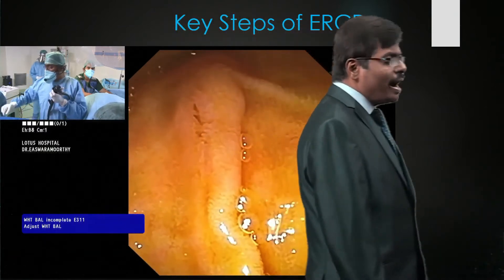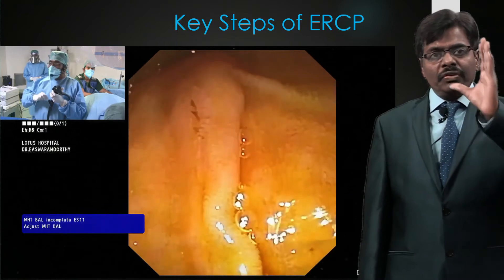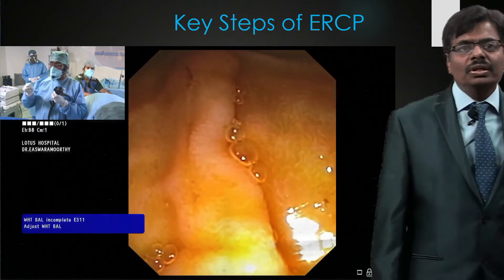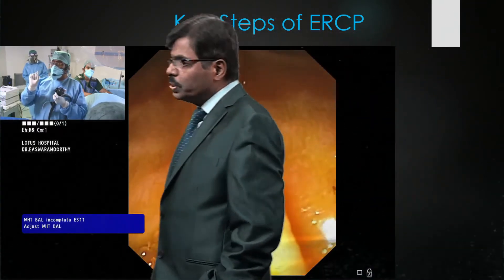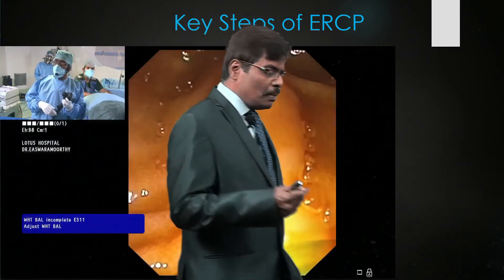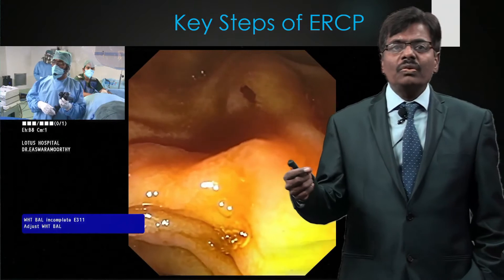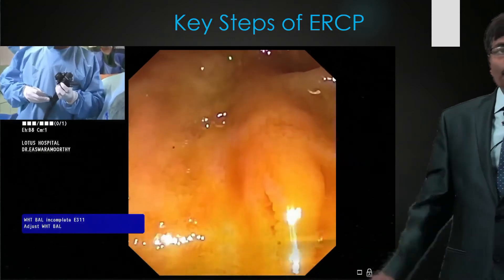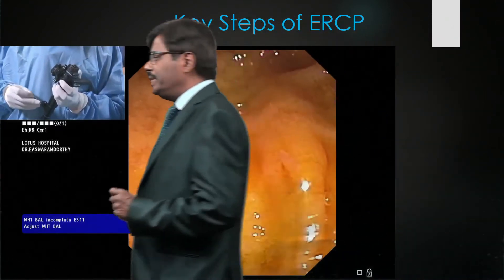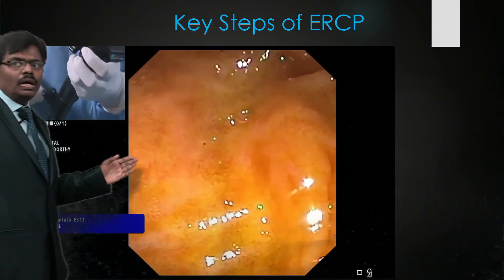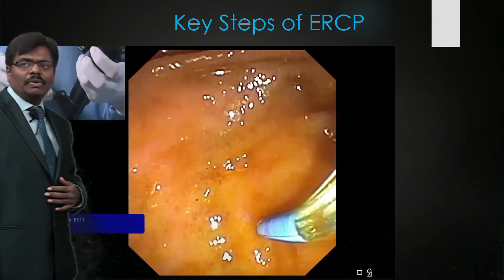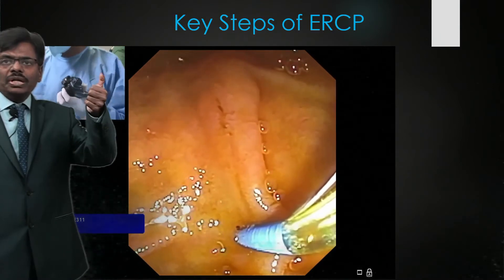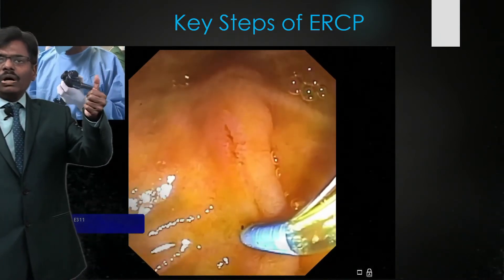The major papilla, ideally, should be in the left upper quadrant — approximately 10 o'clock position. You may wonder why 10 o'clock: all accessories coming through the ERCP scope will appear at around 3 o'clock on the monitor, so you need to understand the trajectory. You can change the angulation by controlling the elevator up/down knob and by asking the staff nurse to control the bow wire — these are two ways to control the direction.